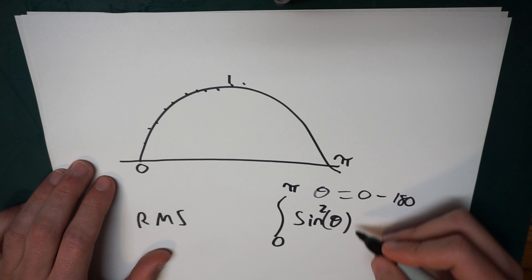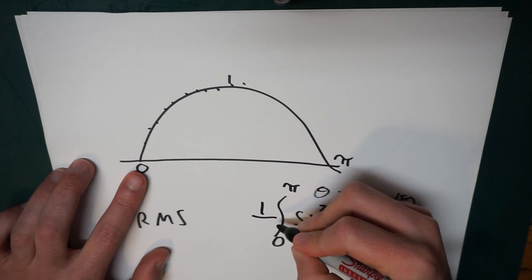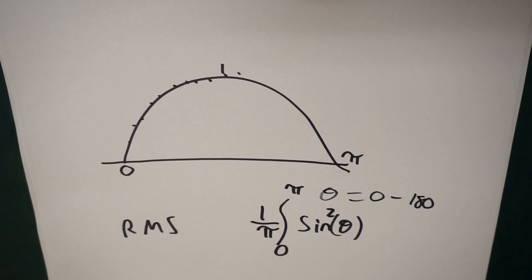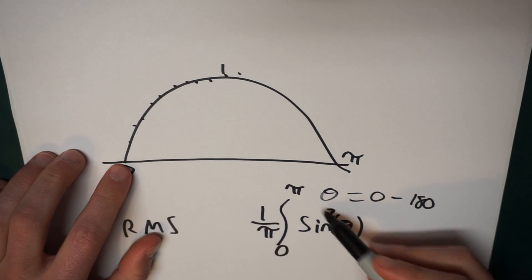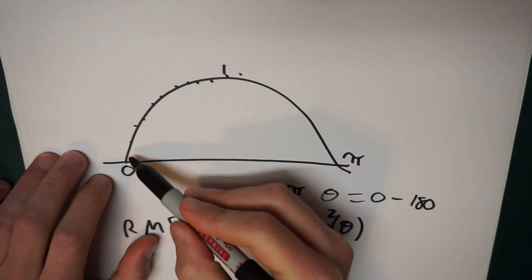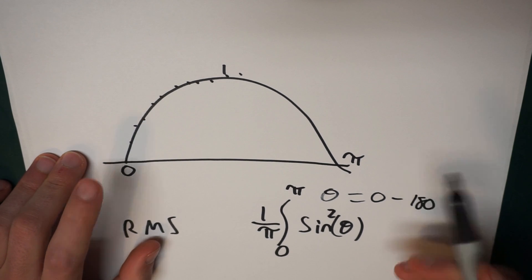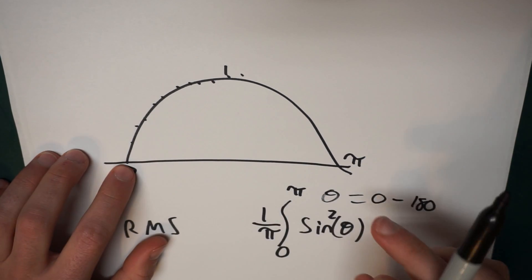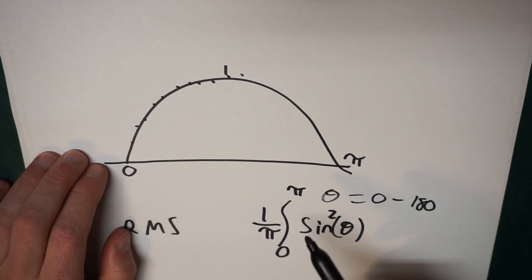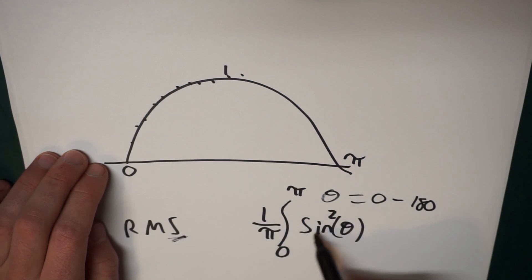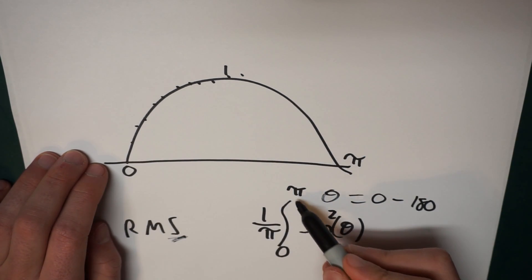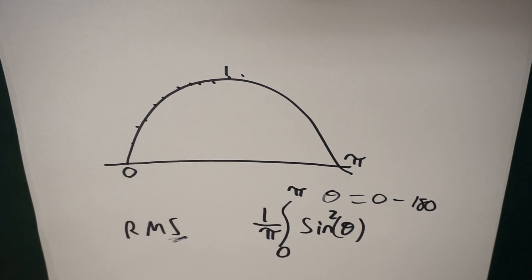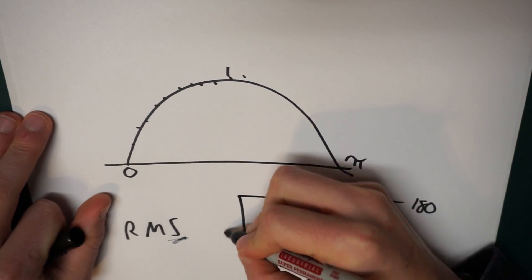So to find the average, I'm going to add up all these squared values and then divide by the length of this waveform — the time frame from 0 to pi. That's where the mean part comes in. The square: we square all the values. The mean: we add them all up and divide by how many there are — that's the average. And then in the end, we're going to take the square root of this whole thing. So let's go ahead and do that analytically and see what we get.